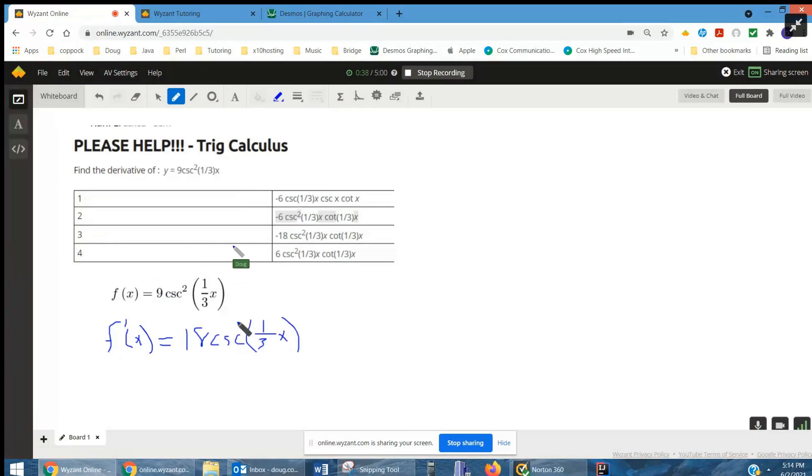But then when we took the derivative of cosecant, this was like the inside function right here, and we have to take the derivative of that.